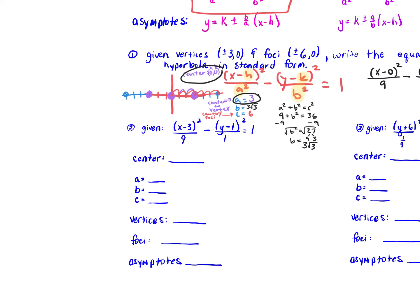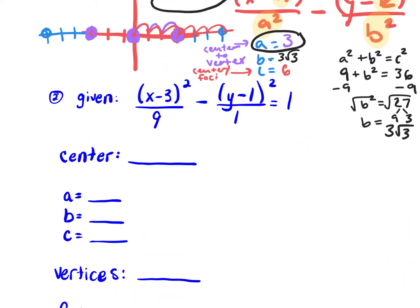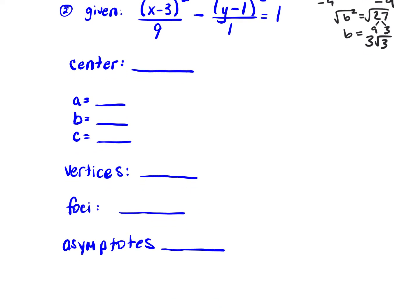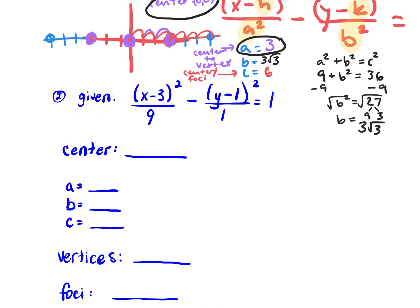All right, let's take a look at number 2. We're given our hyperbola in standard form and we need to find center, a, b, c, vertices, foci, and asymptotes. Right off the bat, what's our center? It's 3, 1 — it comes from our h and k; we just flip the signs. Always, the a squared comes first — it doesn't matter if it's under the x or the y, a squared is always the first term.